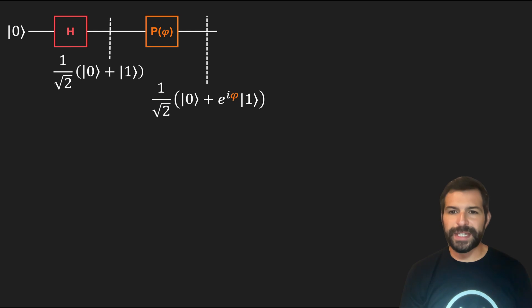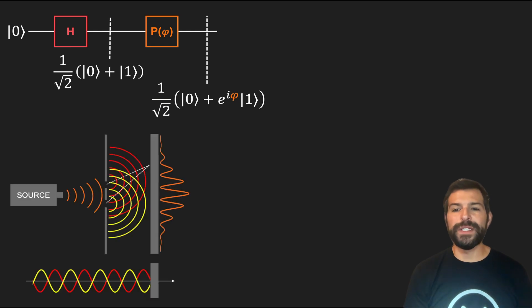But then, what does this phase represent in the double slit experiment analogy? Well, if we think about it, what we are doing here is changing the relative phase of the wave emerging from the bottom slit with respect to the phase of the wave from the top slit. And if you recall, this is exactly what we see when we move along the screen: a change in relative phase of the incoming waves due to the difference in the lengths of the paths they have to travel. So basically, we can say that changing the angle phi is equivalent to moving along the y coordinate on the screen.